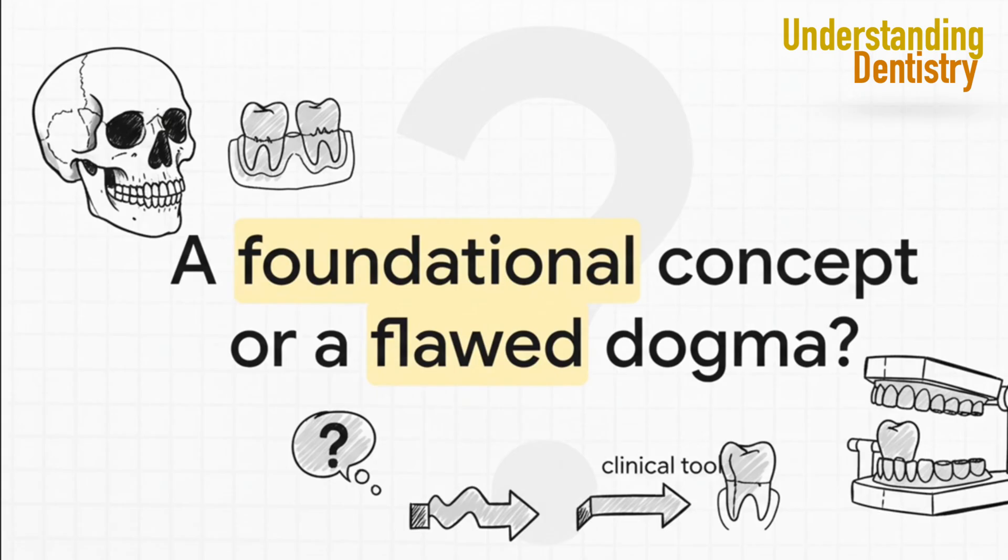So, is centric relation — or CR as we'll call it — a foundational concept we can't do without? Or is it maybe a flawed dogma we've held onto for too long? For decades, it's been a cornerstone, an essential reference for complex restorative work. But now a really fierce debate is questioning its very foundation.